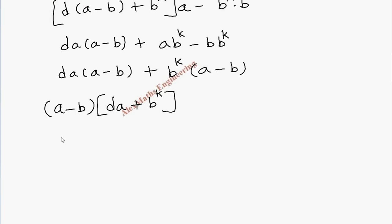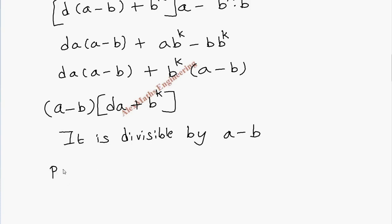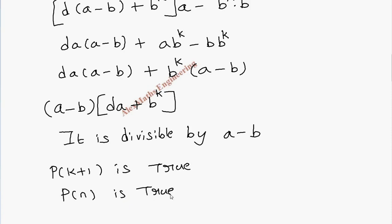Since the entire term is a multiple of (a - b), we can say it is divisible by (a - b). Therefore P(k+1) is true, and P(n) is true for all n belonging to natural numbers by the principle of mathematical induction.